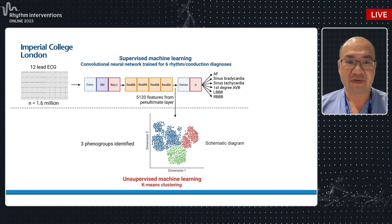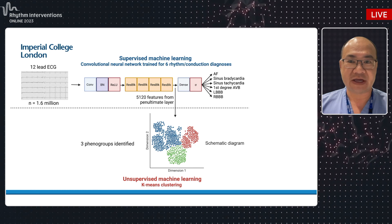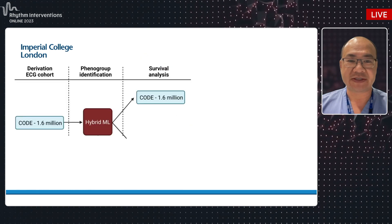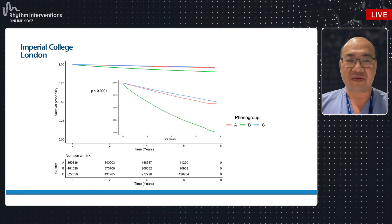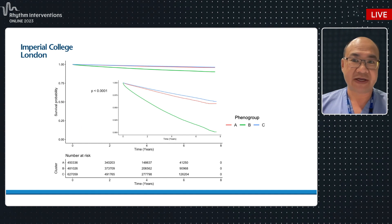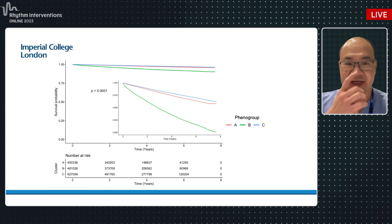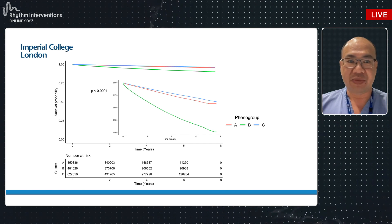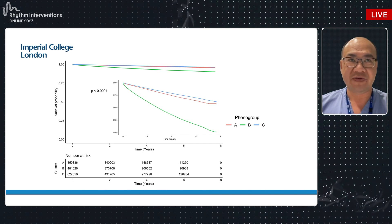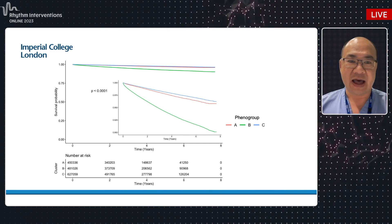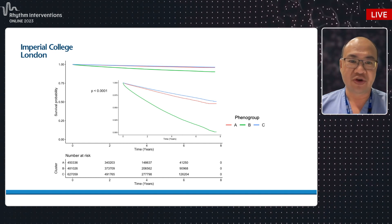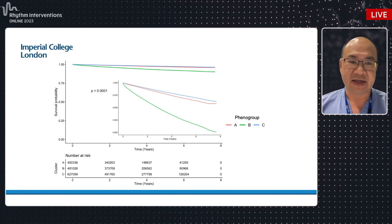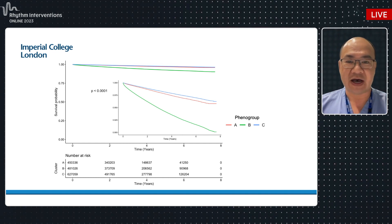We used these 5,000 features to cluster patients into different groups. We identified three main phenol groups based on the presence or absence of these features, and found that they had very different survival trajectories. In an unsupervised way, the model had learned important subtle features that differentiate high versus low risk individuals — without the human telling it what the high and low risk features are.